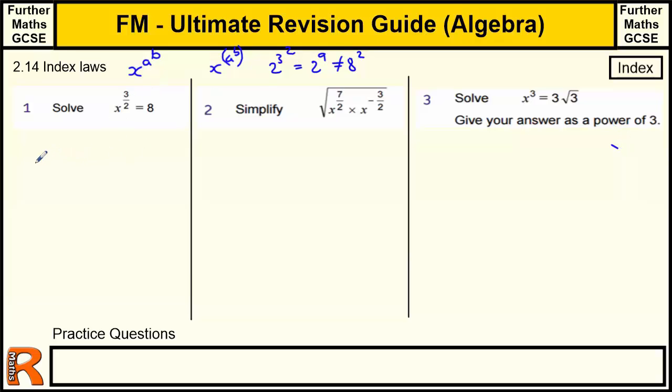So our first one is x to the power of 3 upon 2 equals 8. Now, if you're familiar with your index laws, you know the power of 3 upon 2 is the same as x to the power of a half cubed. x to the power of a half is the square root of x, and then we're cubing it to give us 8. So if we undo this, we do the cube root first.